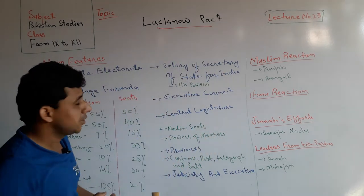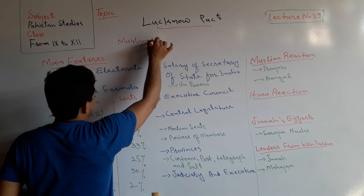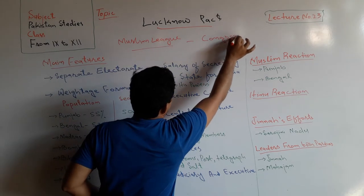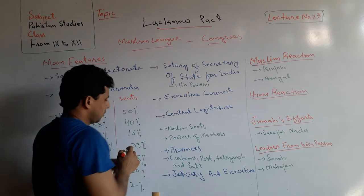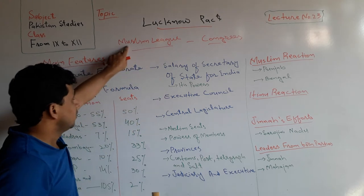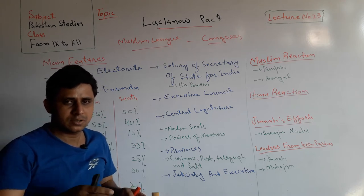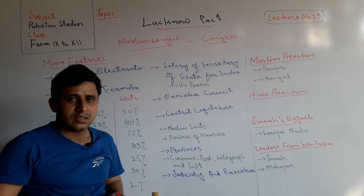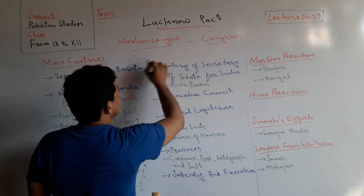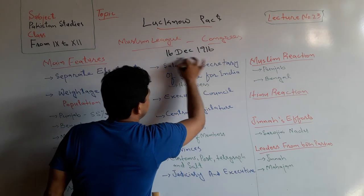The Lucknow Pact was an agreement between the Muslim League and Congress. This agreement was signed between these two political parties. The Muslim League was a political party of Muslims of India, and Congress had a majority of Hindus. This agreement was signed on 16 December 1916.